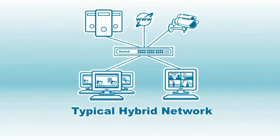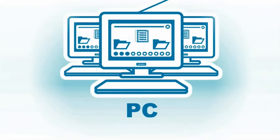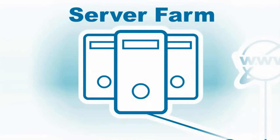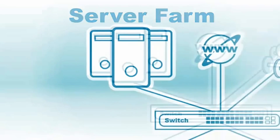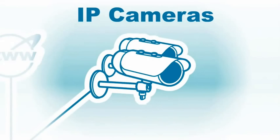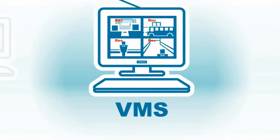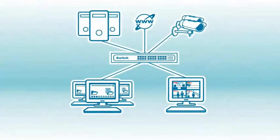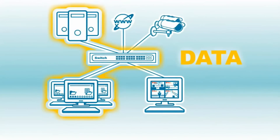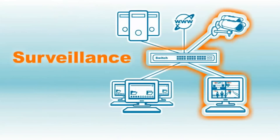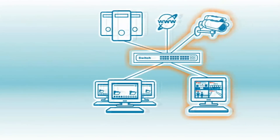But setting up a reliable hybrid network can be difficult. A typical hybrid network may include office PCs, a server farm for storing shared files and archives, IP cameras to monitor areas of your office, and video management systems for monitoring and managing your surveillance video. So on the same network, you may have data traffic between your PCs and server farm, and surveillance traffic between your IP cameras and video management systems.